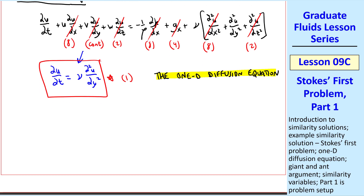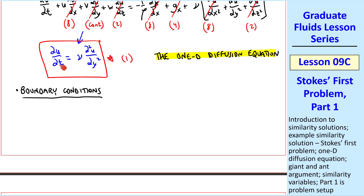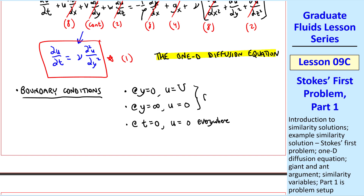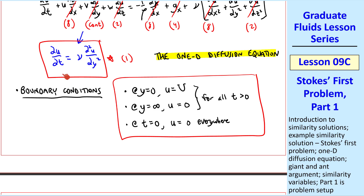We'll need boundary conditions to solve it — we need three of them: one for time and two for y. At y equals zero, u equals capital U for all times greater than zero. At y equals infinity, far away from the wall, u is zero. At time equals zero, u equals zero everywhere — this last one is technically an initial condition. With these boundary conditions, the problem is well posed: one equation, one unknown, with the proper number of boundary conditions.